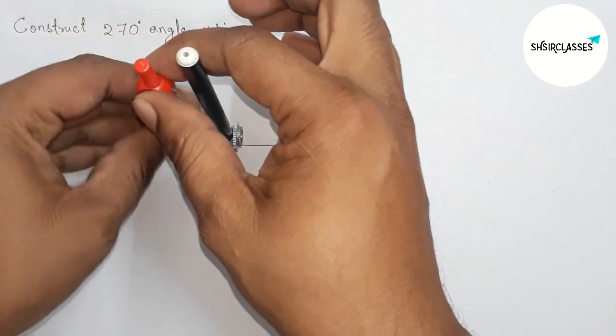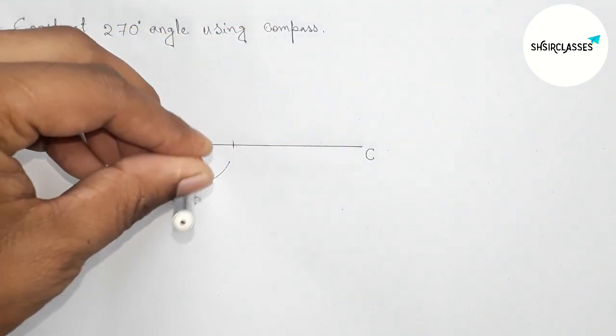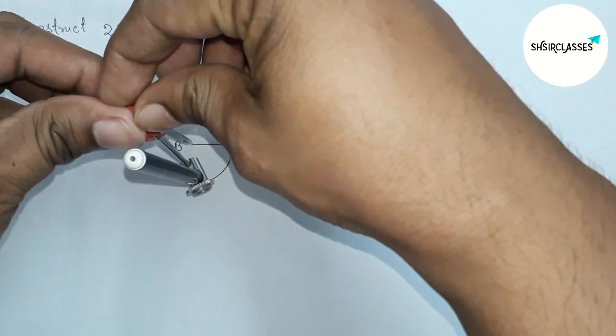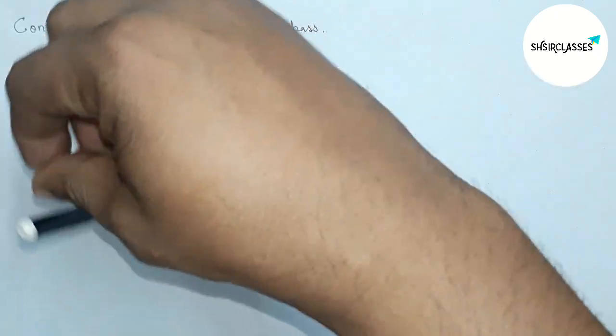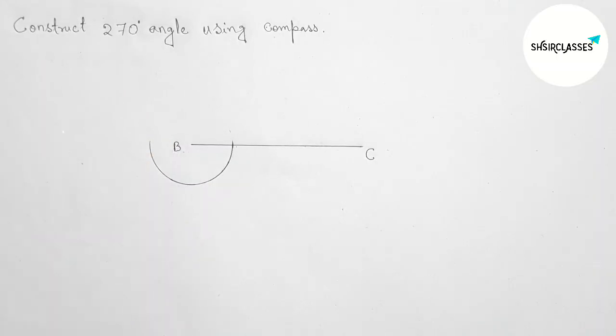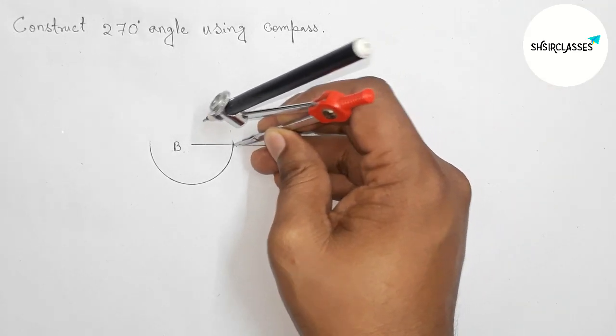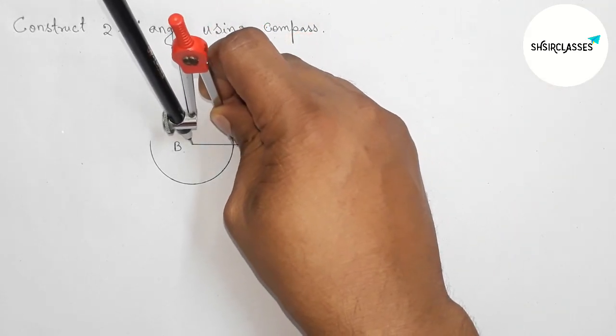on point B and take any length. First, draw an arc this way on this side. Here, we have to draw a 90-degree angle below the line BC. Now, taking the same length